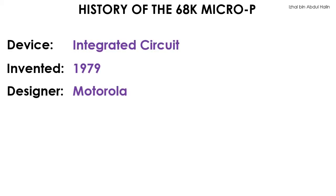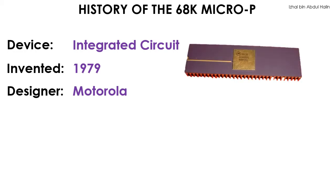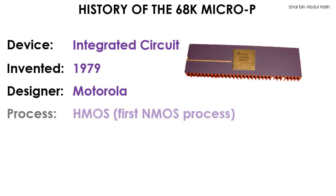The 68K microprocessor is an integrated circuit device that was invented in 1979 by a company called Motorola. This is a picture of the prototype of the first 68K microprocessor. The integrated circuit is packaged in a dual in-line package. The earliest 68K microprocessor was fabricated using the HMOS process.